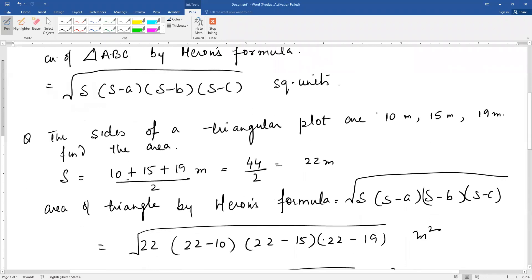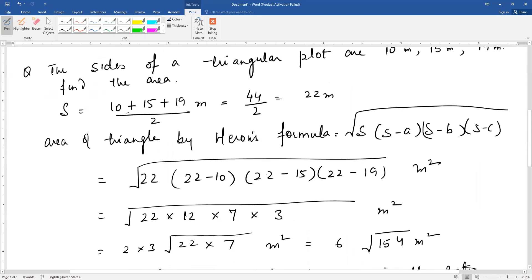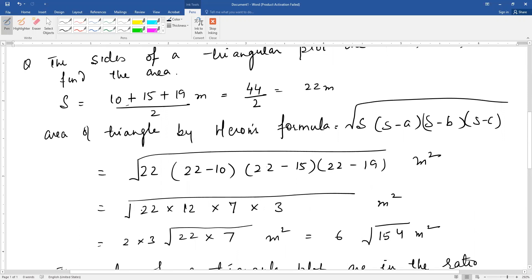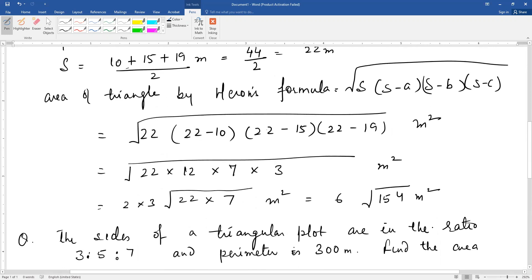Ab Heron's formula lagaya, area of triangle. Formula baar baar likhiye taaki yeh aapko yaad ho jaye. S ki jagah pe aayega 22, S minus A matlab pehli side le li, 22 minus 10, S minus B, 22 minus 15, aur S minus C, teesri side C hai, to 22 minus 19. Aur kyonki yeh sab meter mein diya hai, to area ho gaya meter square. Area ki units waise bhi square units hi hote hain. Ab isse jab hum calculate karenge, to dekhiye yeh is tarike se: 22 × 12 × 7 × 3 and this comes out to be 6 under the root 154 meter square. Jo factors ko root se bahar aa sakte hon, nikaal dijiyega.